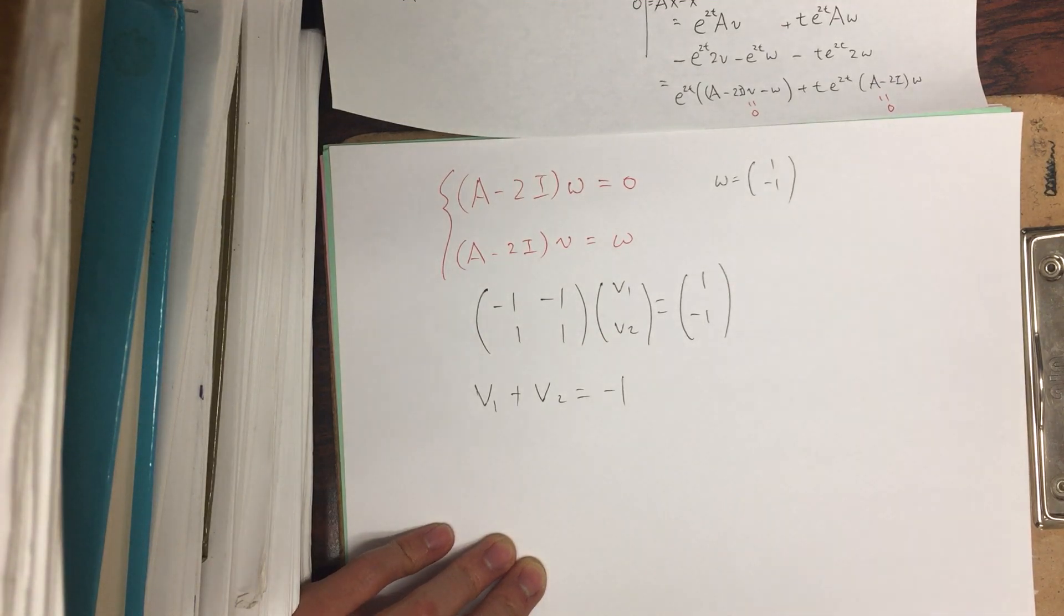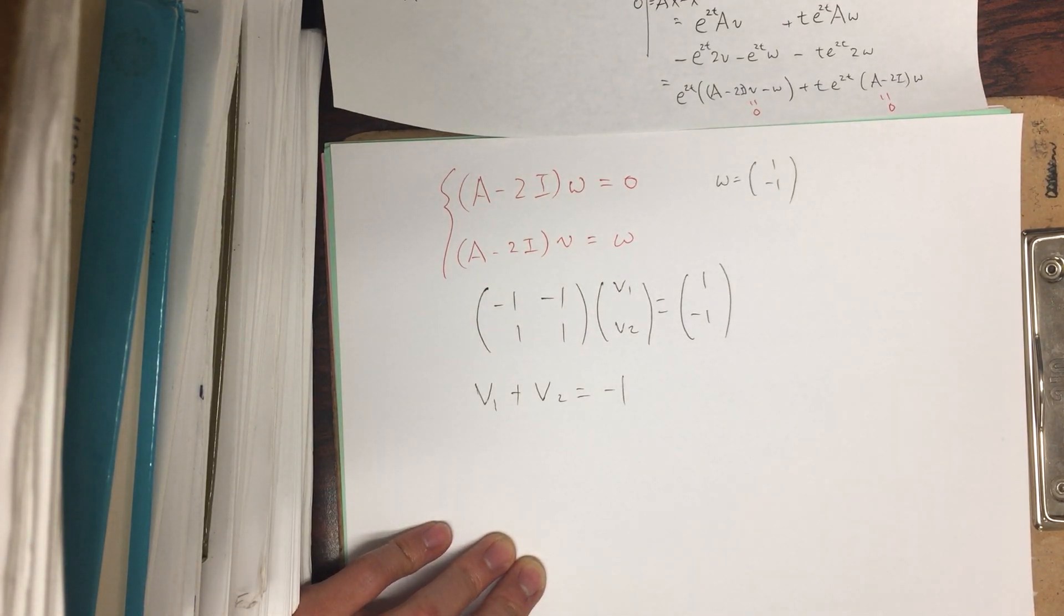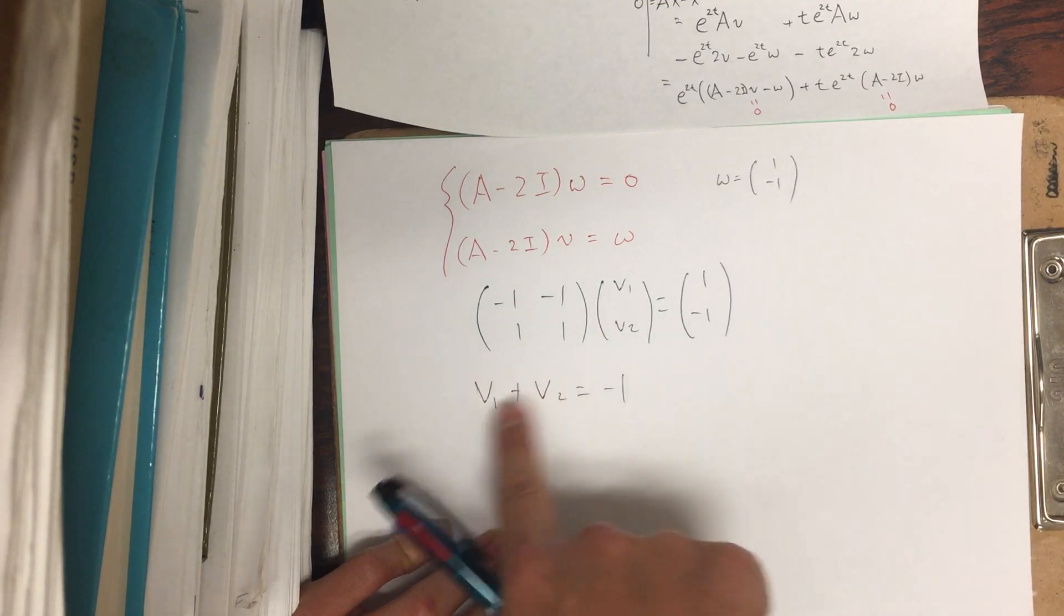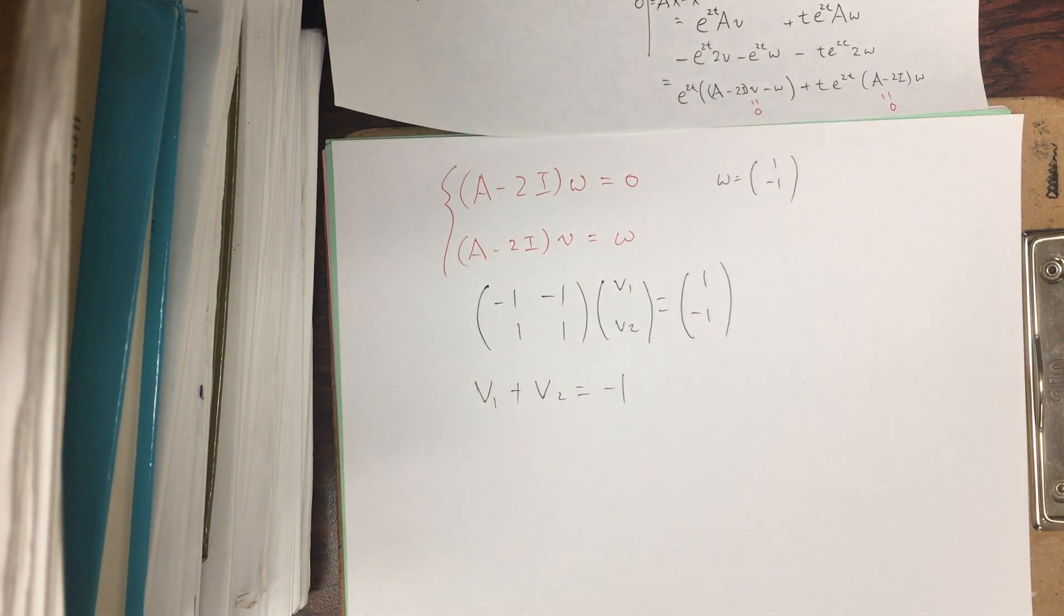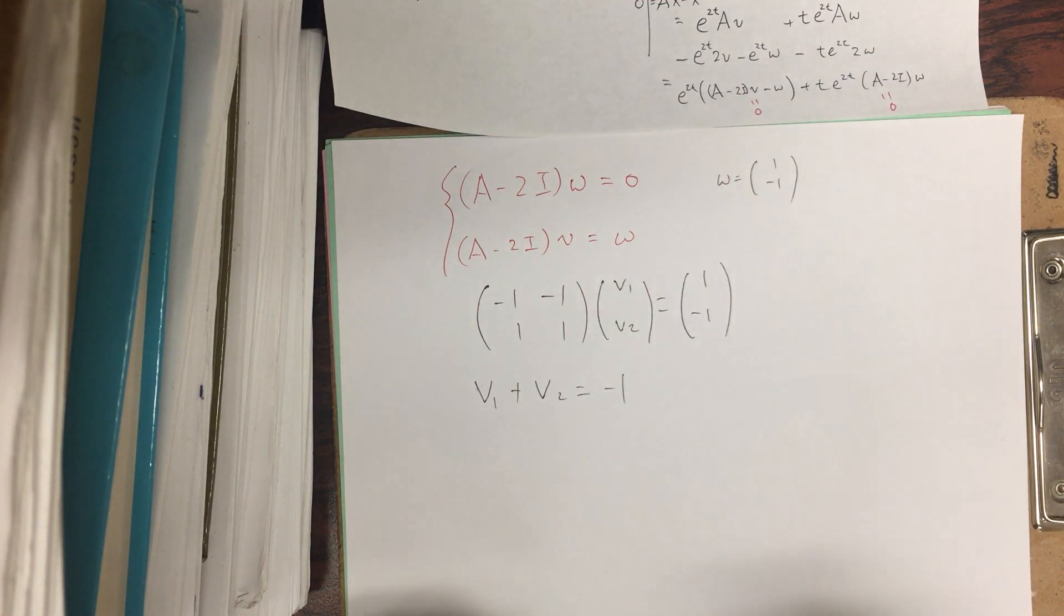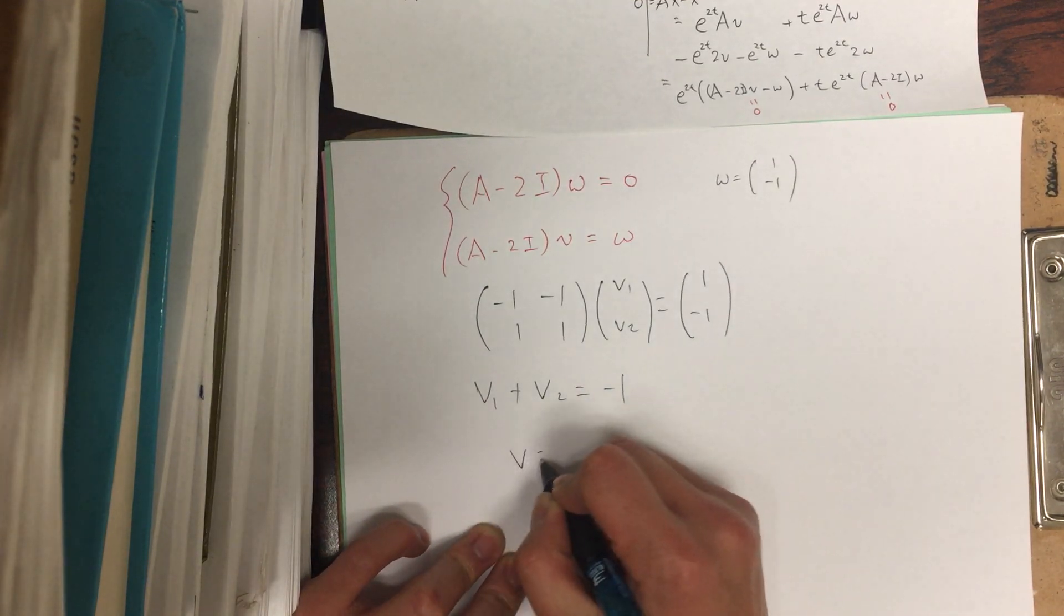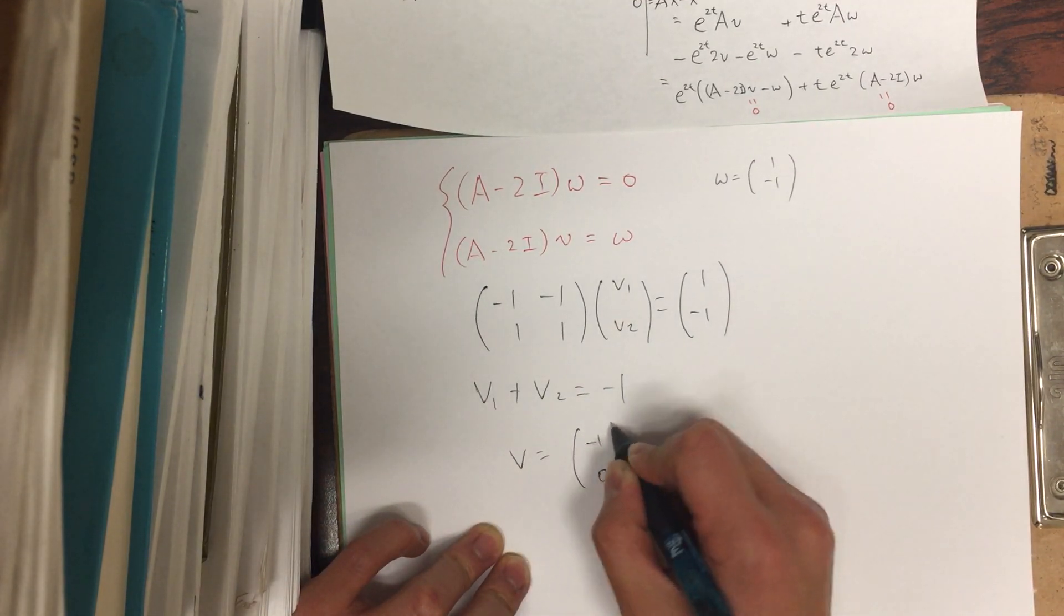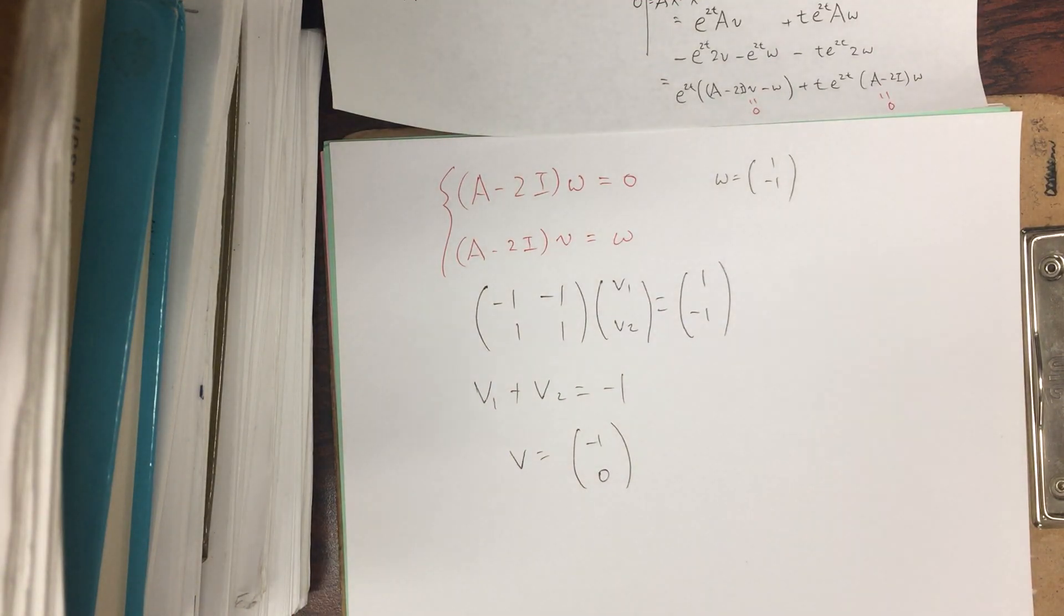Okay. And so basically v2, you can say is a free variable. And in fact, in this case, we could even set it to be just 0, because if it's 0, v1 is -1. We want to avoid the vector [0, 0]. So as long as it's not 0, then you can set your free, as long as you don't make the whole thing 0, you can set one of your free variables to be 0. Okay. And so v is [-1, 0]. This is one possible vector. Okay.